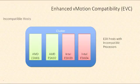How about DRS? Let's say we've created a host cluster and enabled fully automated DRS on that cluster. DRS relies upon vMotion — that's how DRS works. With DRS, vCenter is going to constantly analyze the workloads of your ESXi hosts and use vMotion to move virtual machines from one host to another for load balancing purposes.